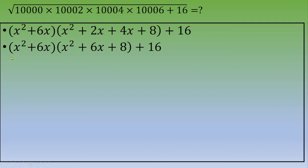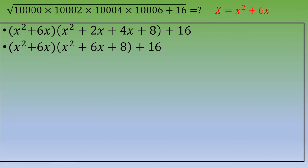We can notice that we have the same quantity x² + 6x appearing in both factors. So we set capital X = x² + 6x. Plugging this in, the expression becomes X × (X + 8) + 16.